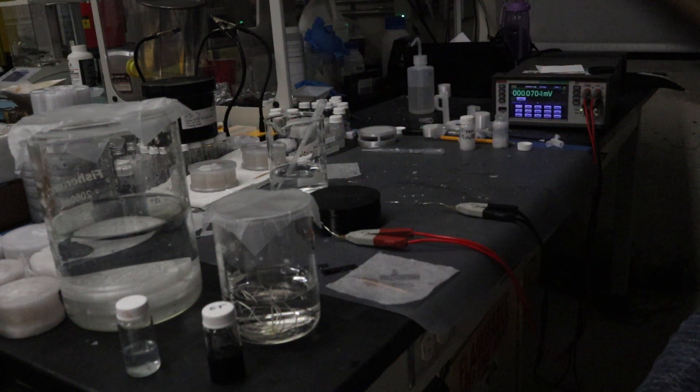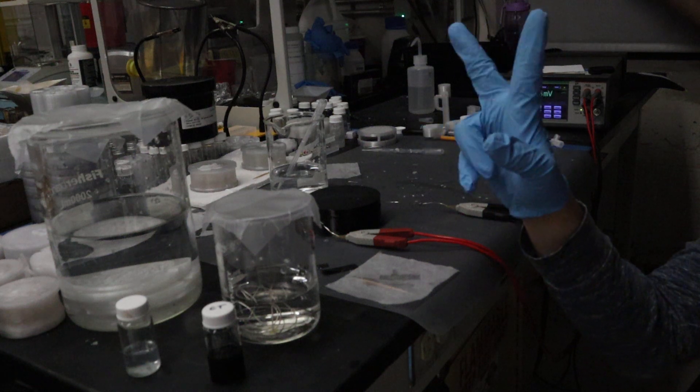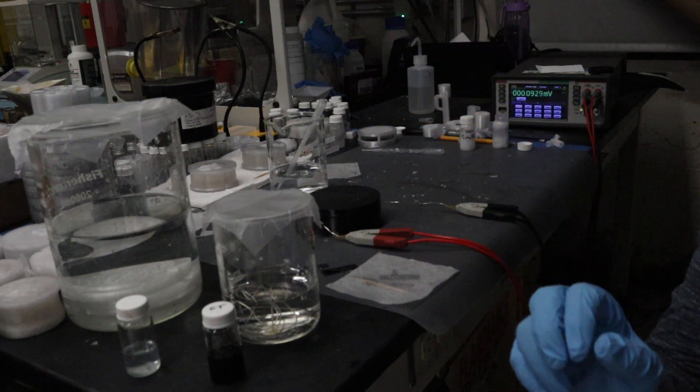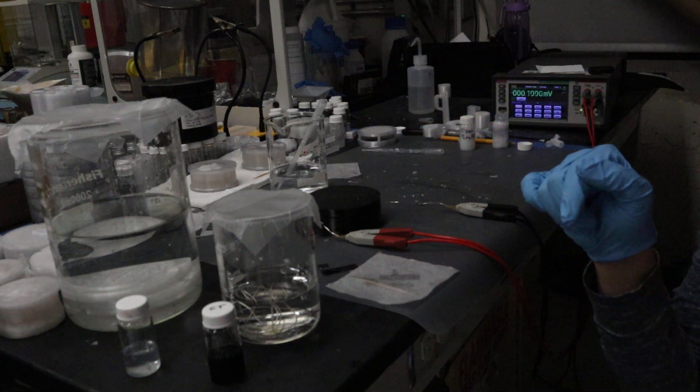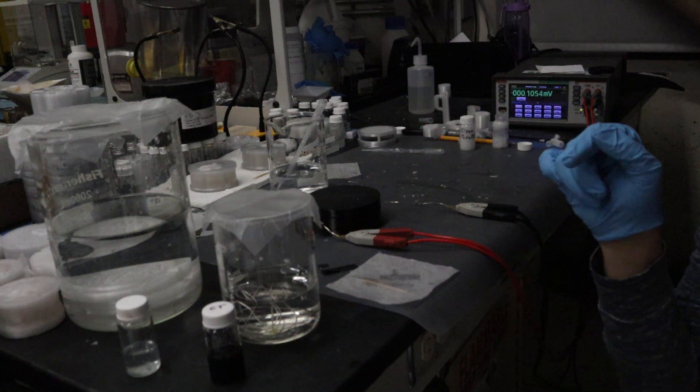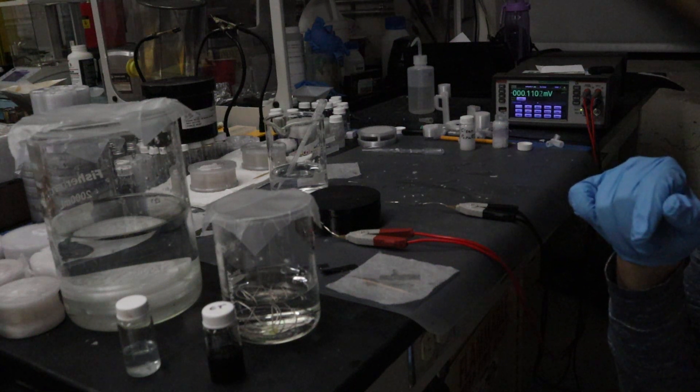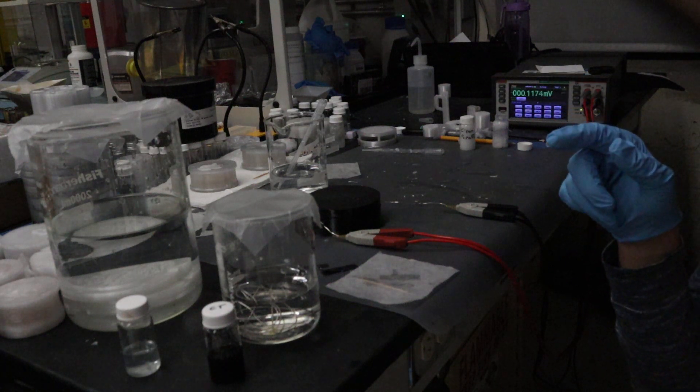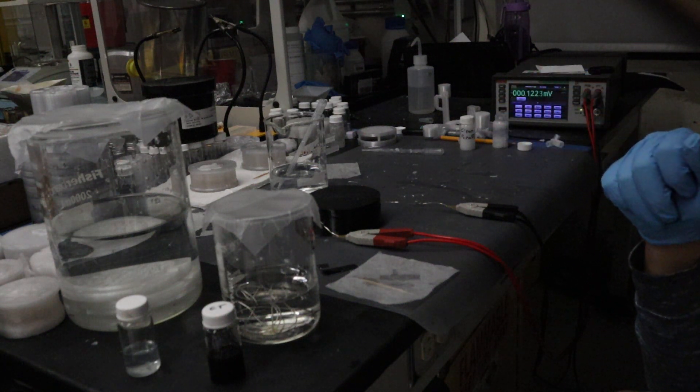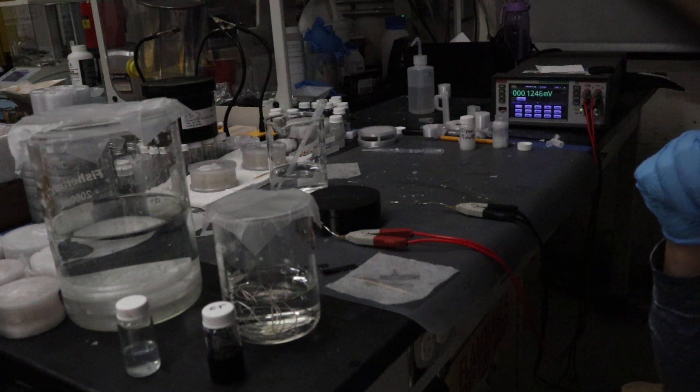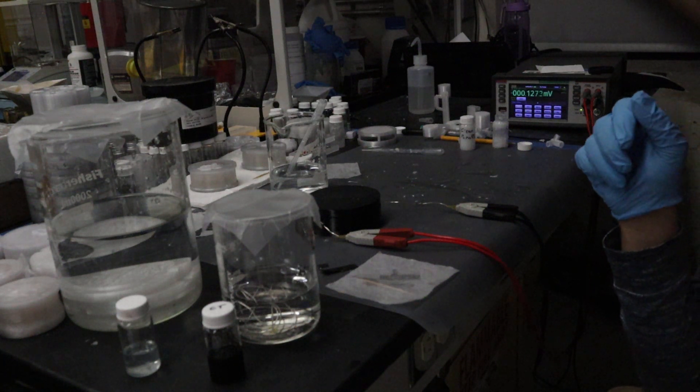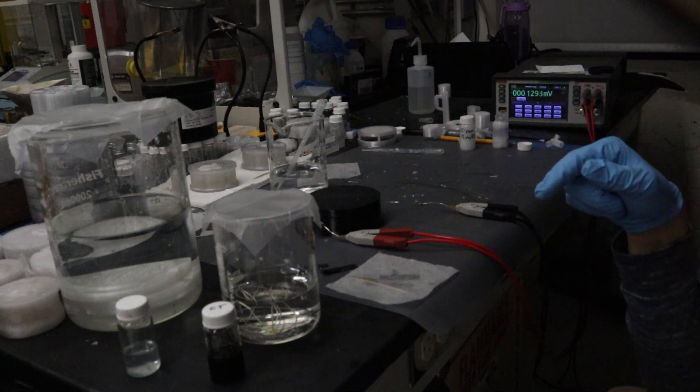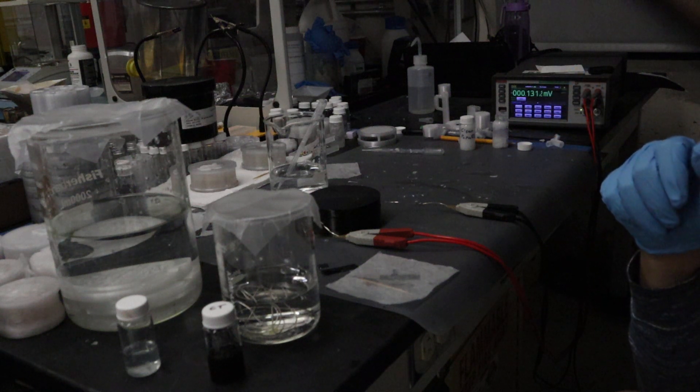And the other thing I forgot to mention is this system has flowback channels. So there's actually small holes drilled in the bipolar membrane, and those holes allow a backflow of ions through the system to compensate for the flow of electrons produced.